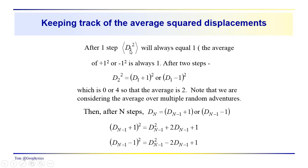Let's take a look. After one step, the average of d1 squared is always equal to 1 - the average of plus 1 squared or minus 1 squared. After two steps, we could have 1 plus 1 squared or 1 minus 1 squared. That would be 4 or 0. This could be minus 1, so minus 1 plus 1 would be 0, minus 1 minus 1 would be 2, and we'd have a 4. We're taking the average of 0 and 4, or two 0s and two 4s, and the average is 2.